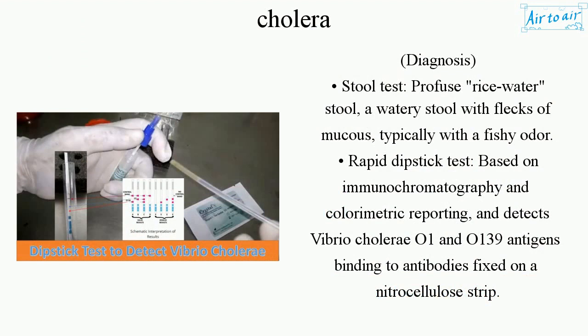Diagnosis includes a stool test showing profuse rice-water stool — a watery stool with flecks of mucus, typically with a fishy odor. A rapid dipstick test based on immunochromatography and colorimetric reporting detects Vibrio cholerae O1 and O139 antigens binding to antibodies fixed on a nitrocellulose strip.